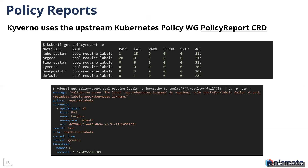Kyverno uses the upstream Kubernetes Policy Working Group Policy Report CRD. This is an open standard that many tools are open to implement, and several of them do. Kyverno, to my knowledge, is the only policy engine that uses this open reporting standard. What this allows you to do is have Kyverno generate what are called policy reports inside of the Kubernetes cluster that have the results of things like validation and image verification policies.